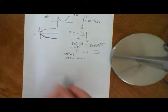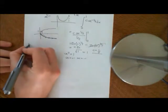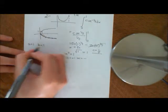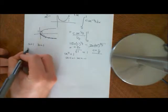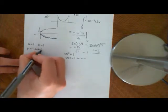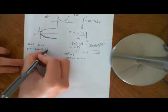Welcome back to this video on the beta distribution. In this video, what we're going to do is see some specific examples of beta distributions. The first one we're going to start off with is a equals 1 and b equals 1. So let's say that p is distributed Beta(1,1).